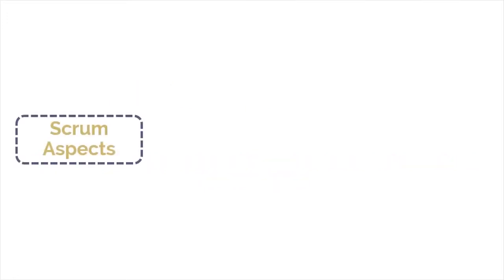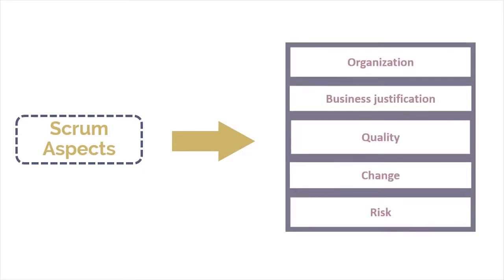The five Scrum aspects that we will discuss in this module are organization, business justification, quality, change, and risk. In the SBOTGuide, all five Scrum aspects are presented in chapters 3 through 7.